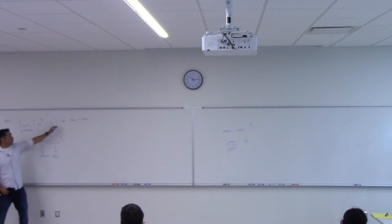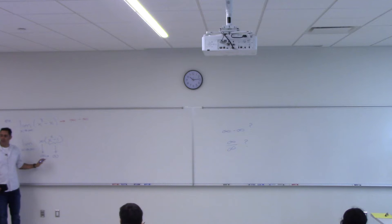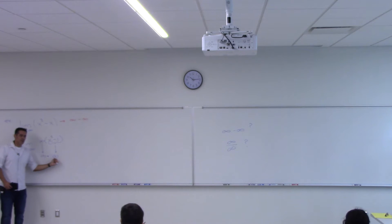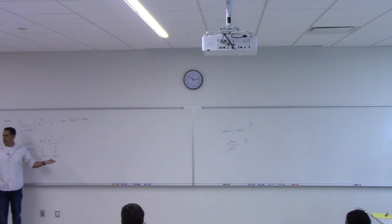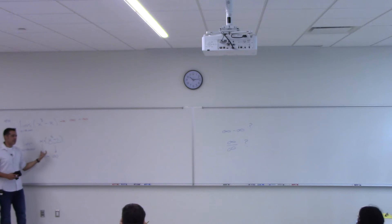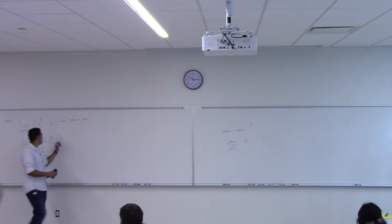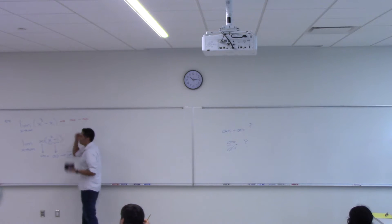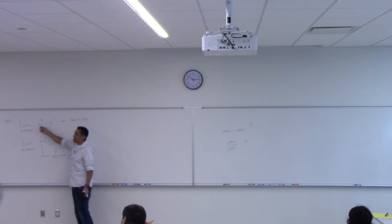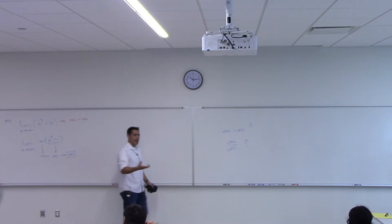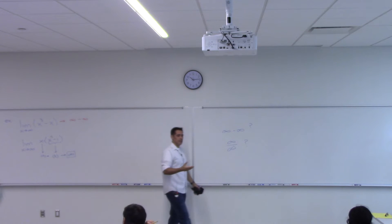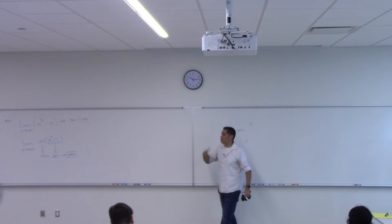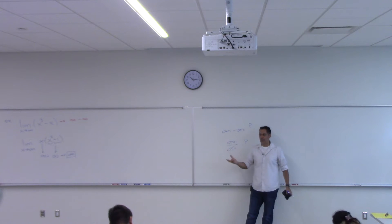Not minus anymore — times. So what's a huge number times a huge number? A huge number, right? So by converting the subtraction into multiplication, you can determine that this thing is infinite, which means the same thing we thought would happen: X cubed dominates X. The bigger X gets, X cubed gets bigger faster than X gets big.